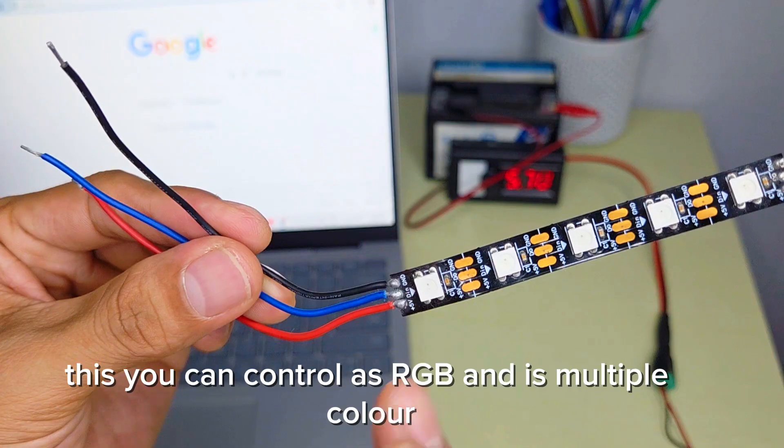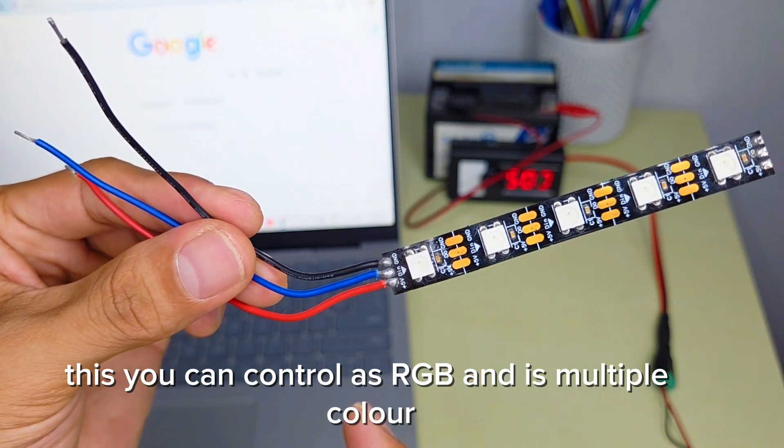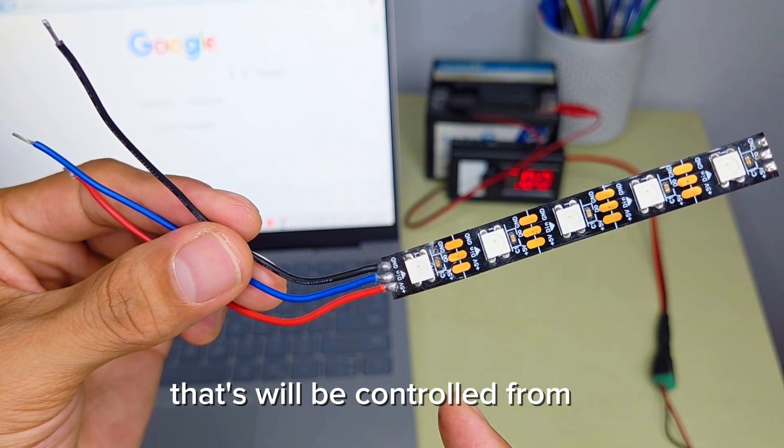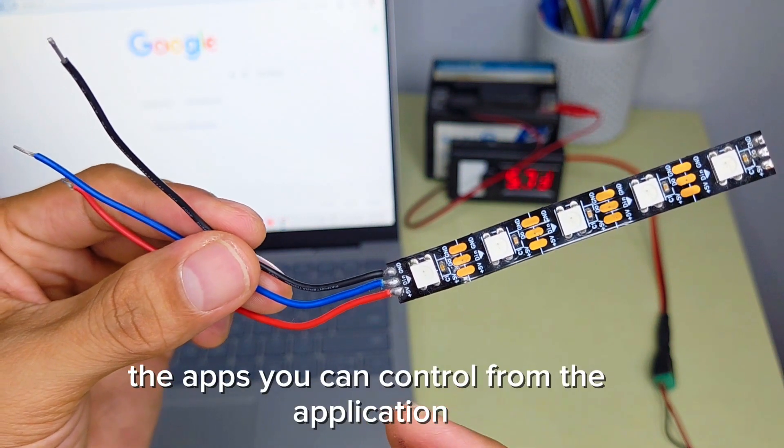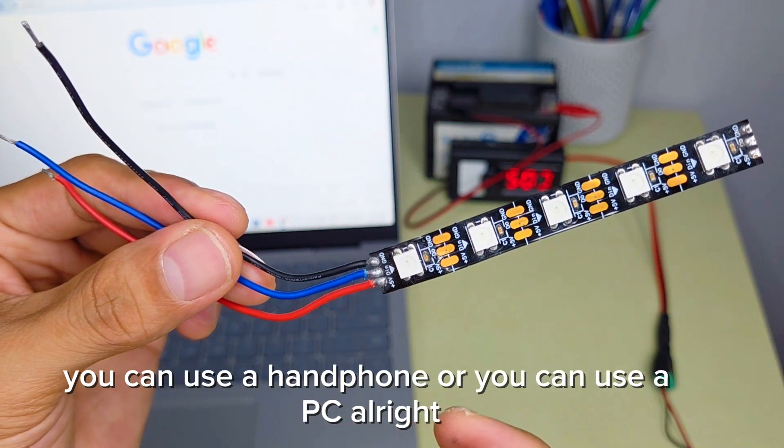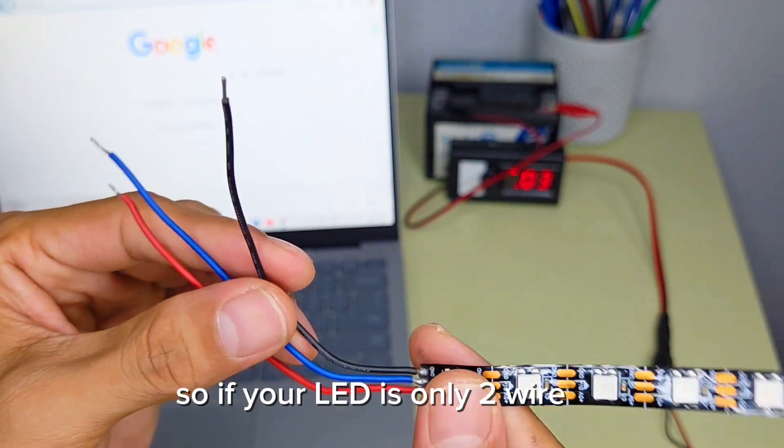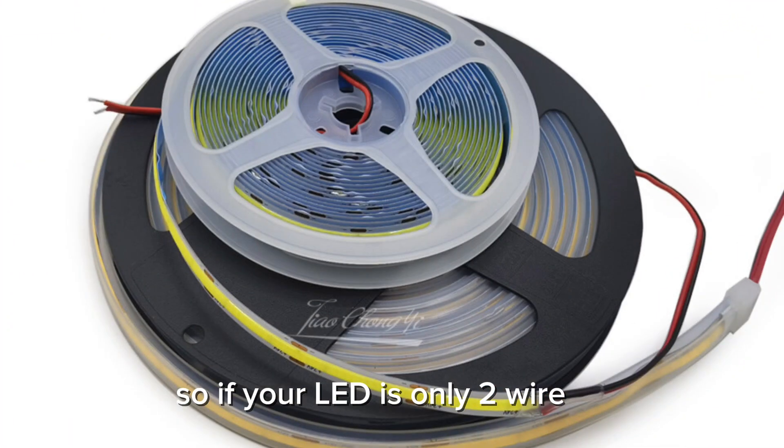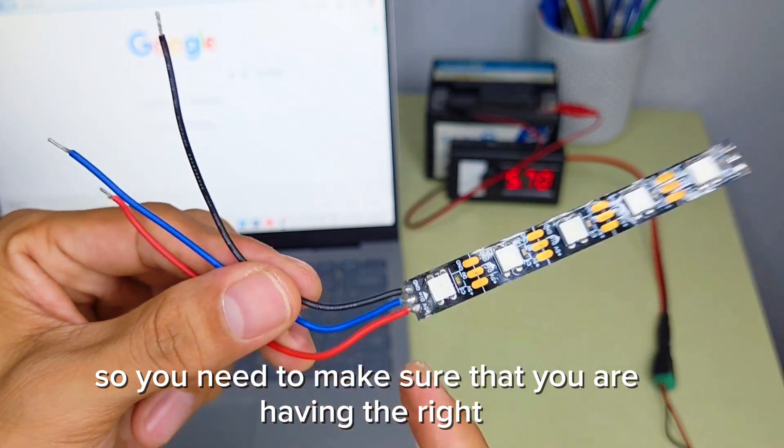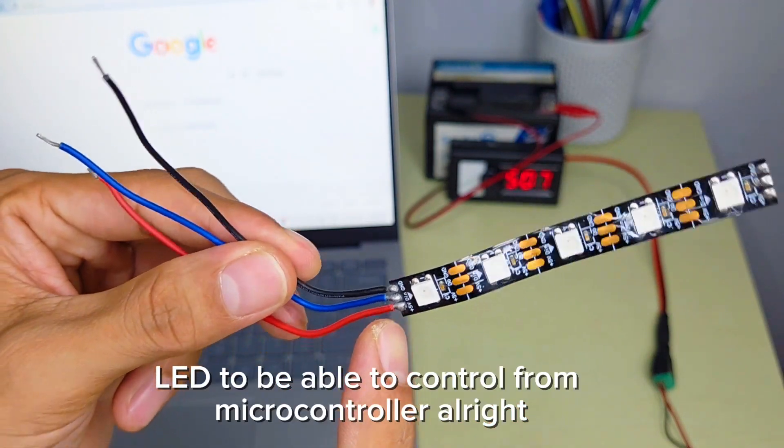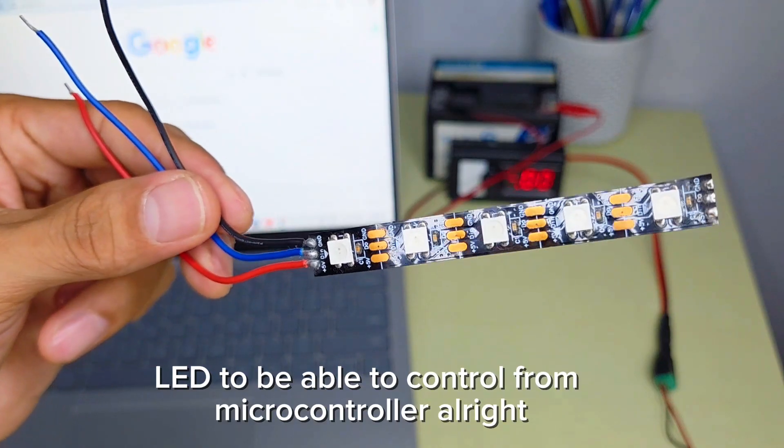You can control it as RGB and multiple colors from the apps. You can control from the application using a handphone or PC. If your LED has only two wires, you will not be able to control it. You need to make sure you have the right LED to be controlled from microcontroller.